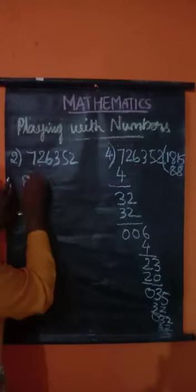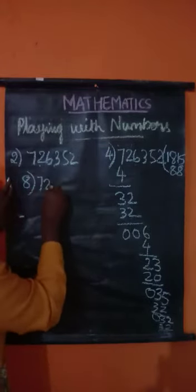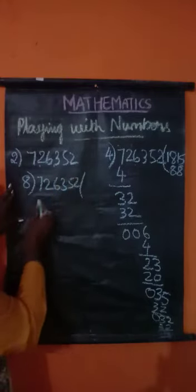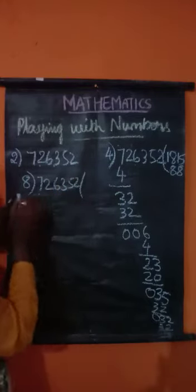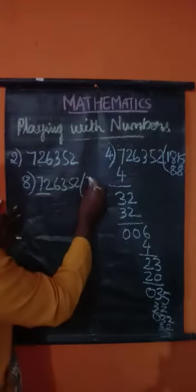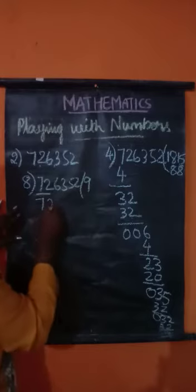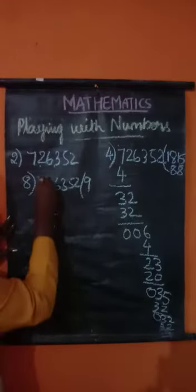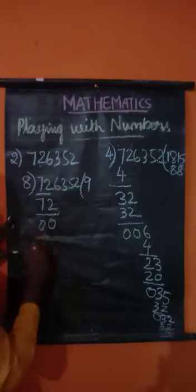726,352. First number is smaller than 8, so I am going to take 2 numbers. 8 nines are 72. In 2, if I cancel 2, I will get 0. In 7, if I subtract 7, I will get 0.